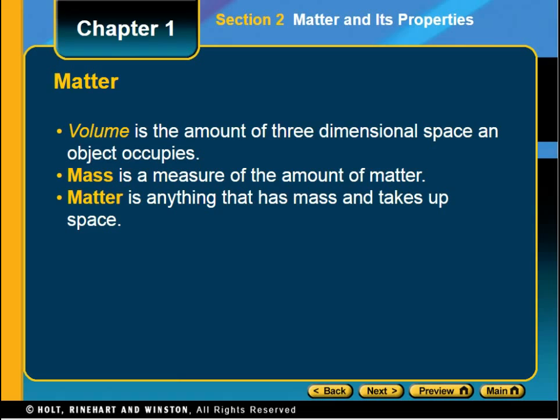Pretty much everything you can look around and see you can give examples — things like a pencil, a piece of paper, a desk — they are all made of matter. Mass is the measure of that amount of matter. We often use matter and weight as interchangeable, but in physics they're not the same thing. Volume is the amount of three-dimensional space that an object occupies — think of it as length times width times height.